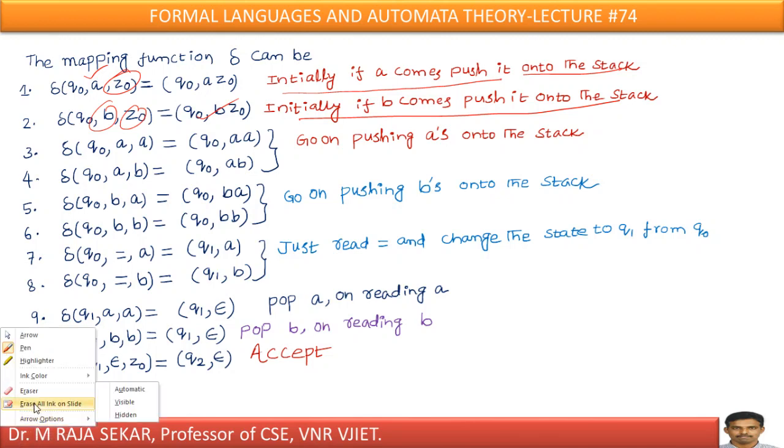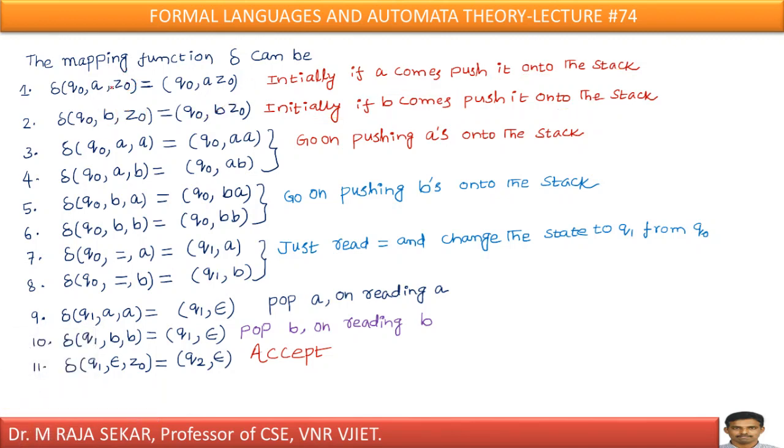Now, this is about initially. If Z naught is top of the stack, that is the initial case. Now, go on pushing A's onto the stack. Let me say, your top of the stack may be A, may be B. If your input is A, just push them into the stack. Go on pushing B's. Your top of the stack may be A, may be B. If you get B, just go on pushing them onto the stack.